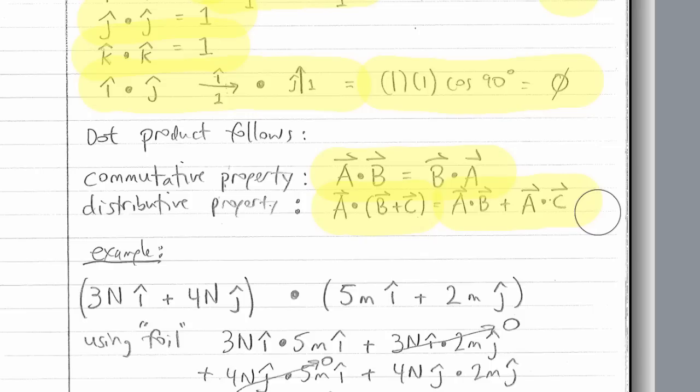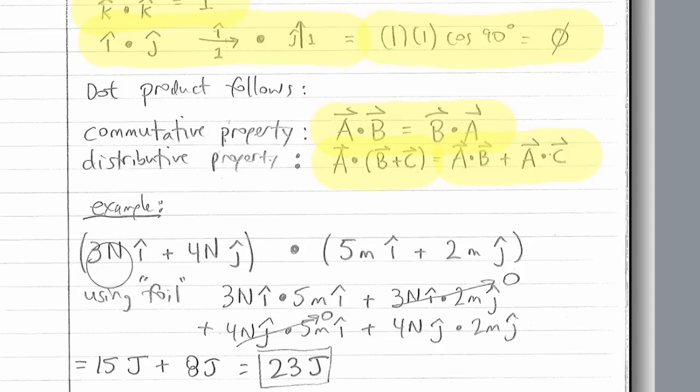Okay, let's take a look at this example right here. So, let's say we have this vector, 3N i hat plus 4N j hat, so this is a force, 3 newtons in the horizontal direction and 4 newtons in the vertical direction, and we want to dot that on this vector here, which is 5 meters in the horizontal direction plus 2 meters in the vertical direction. So, you can just use the FOIL method, first, outside, inside, last. So, here's the first two terms times each, dotted on each other, plus outside, 3 newtons i hat dotted on 2 meters j hat.